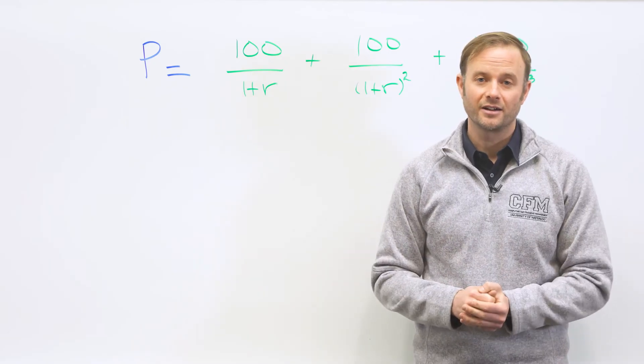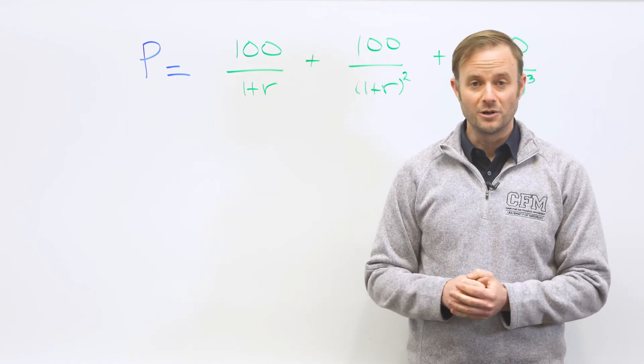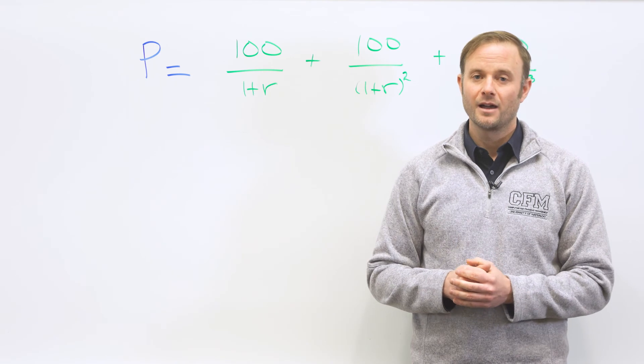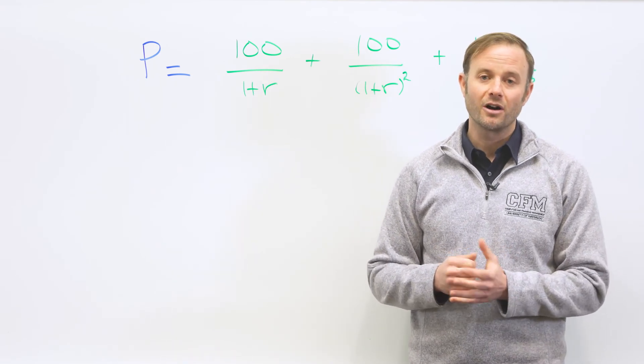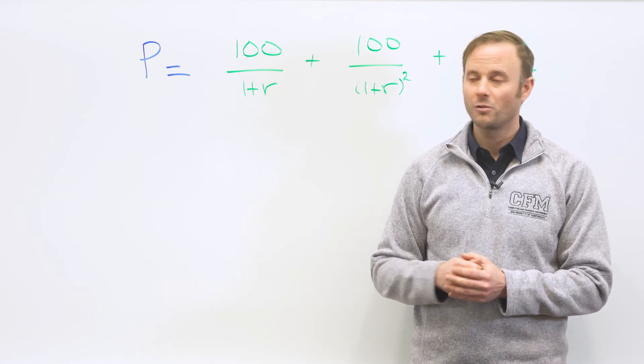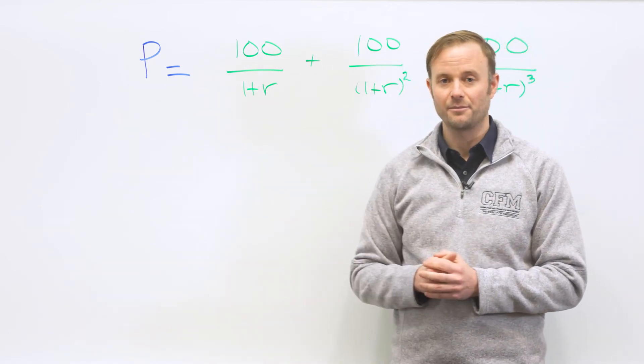So now that we have an understanding of the time value of money, and we know what a bond is, we can look at a very simple example. Imagine a bond that will pay you $100 starting in one year's time for three years. What would the price, P, of that bond be?